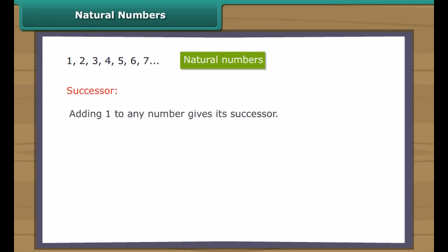Natural numbers. We use one, two, three, four to count the objects. Counting numbers are also known as natural numbers. Adding one to any number gives its successor. Example: one added to twenty gives twenty-one, which is successor of twenty.